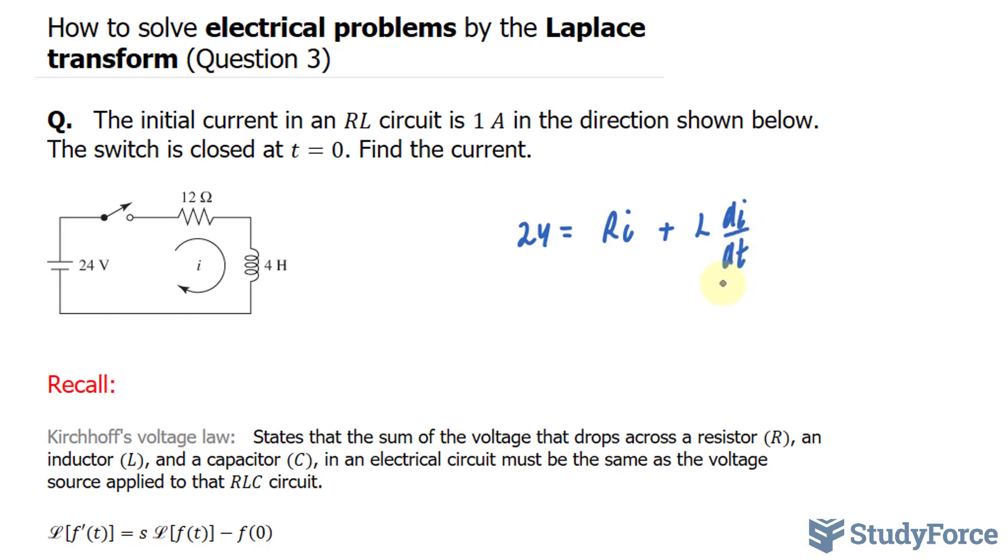Next, what we will do is substitute the values that is found in this circuit and rearrange. What I mean by that is, the resistance here is 12 Ohms. So I'll write down 12 times I plus the inductance is 4 Henrys, 4 times di over dt. Now, since we're using the Laplace transform in this example, I'm going to switch this with I prime. It's the same thing.